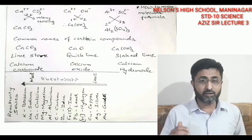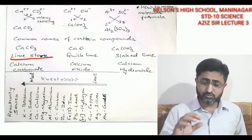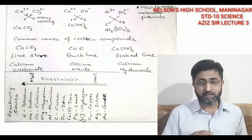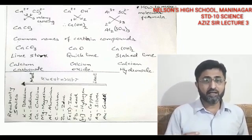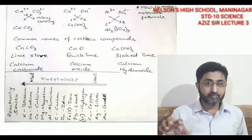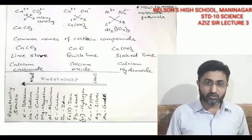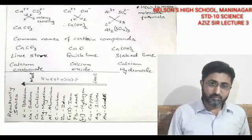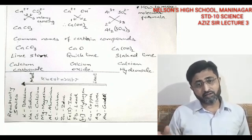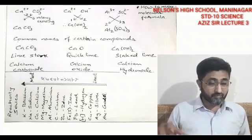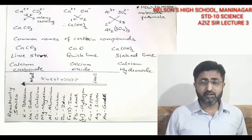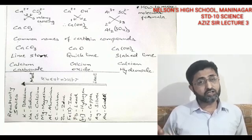Common names are names spoken by ordinary people — for example, water is a common name; the chemical name is hydrogen oxide, but nobody says 'give me hydrogen oxide.' Similarly, ammonia is a common name; its chemical name is nitrogen hydride (NH3), but we don't use the chemical name in everyday speech.